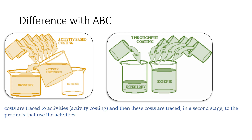In activity-based costing, all costs are traced to activities, and then in a second stage these costs are traced to the products that use those activities. You should relate this to the point of activity-based costing versus throughput accounting.